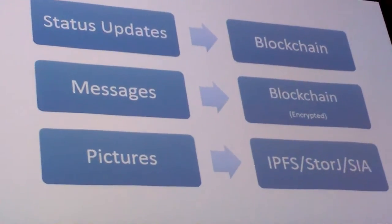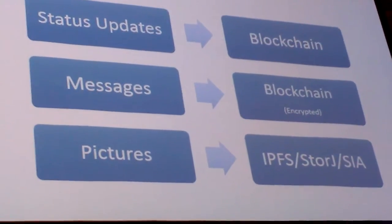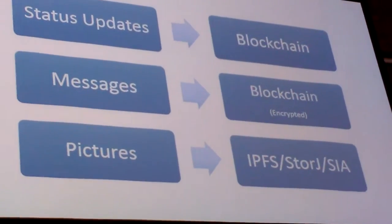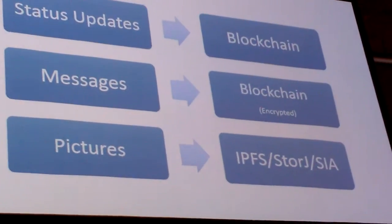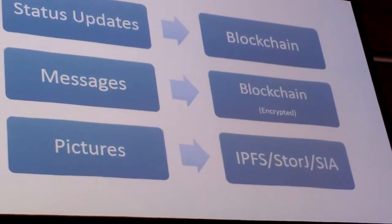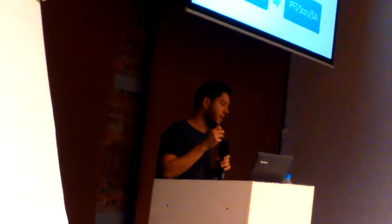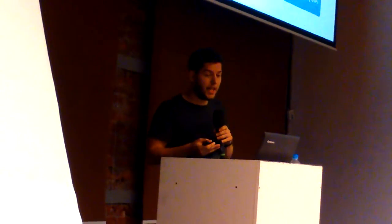Messages you can also save on the blockchain because it's just text, but in terms of messages you might want to encrypt them so that not everyone sees what's inside. For pictures, you can't really save them on the blockchain — the blockchain was not designed to store images. It's only like a distributed database to store transactions or maybe small text, but not images. It doesn't make sense.